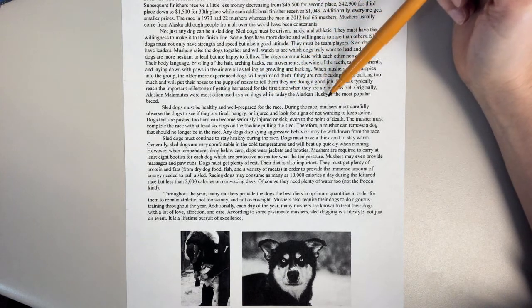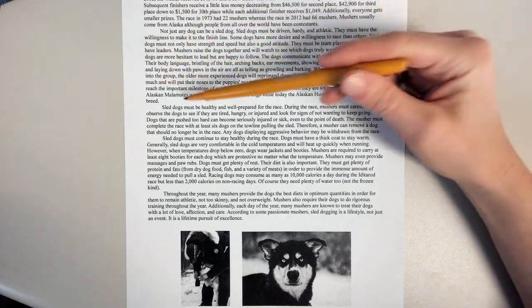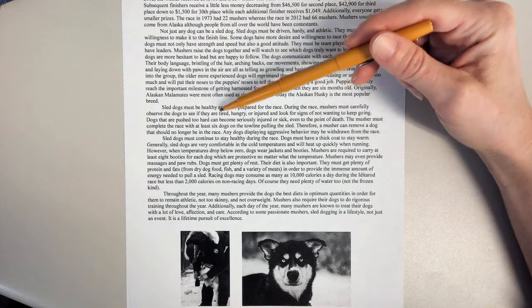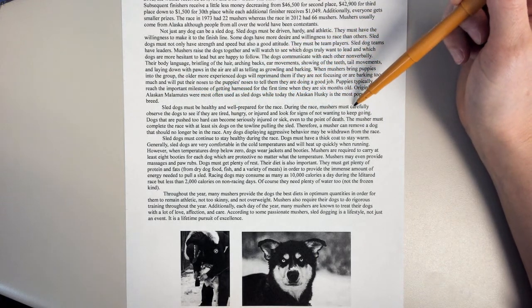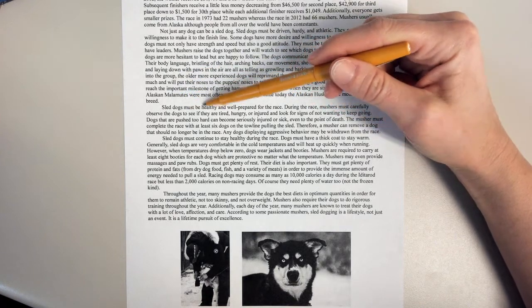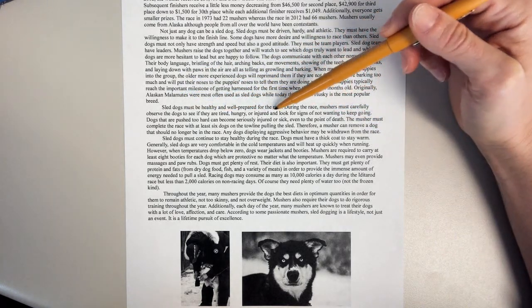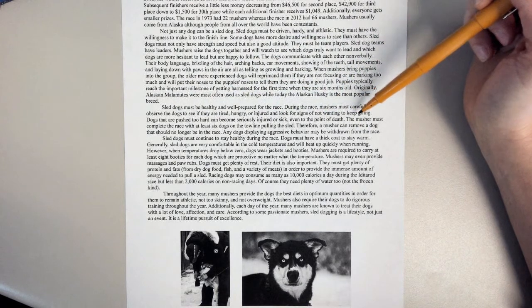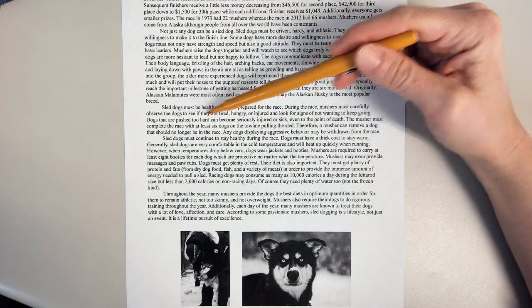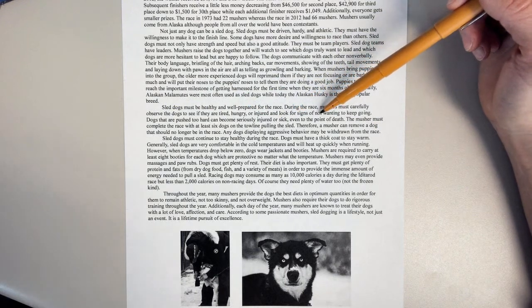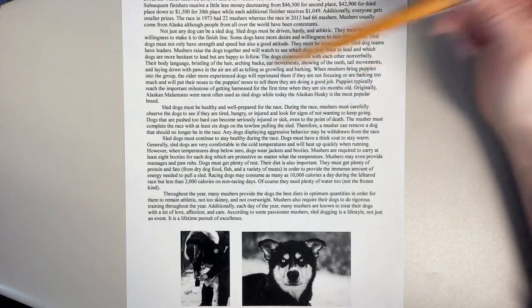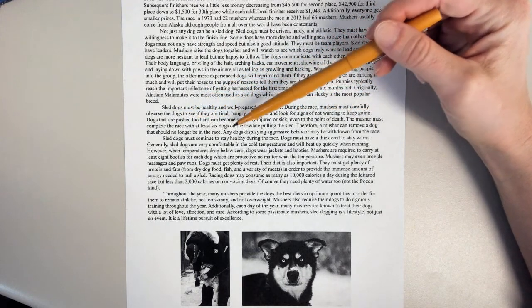Sled dogs must be healthy and well-prepared for the race. During the race, mushers must carefully observe the dogs to see if they are tired, hungry, or injured, and look for signs of not wanting to keep going. Dogs that are pushed too hard can become seriously injured or sick, even to the point of death. The musher must complete the race with at least six dogs on the towline pulling the sled.